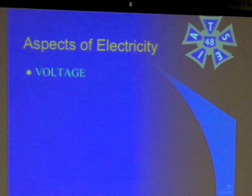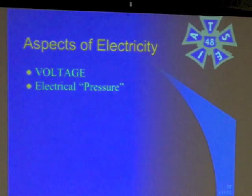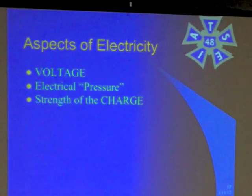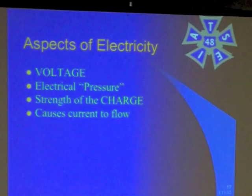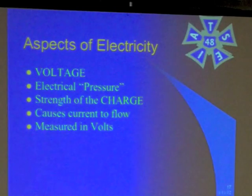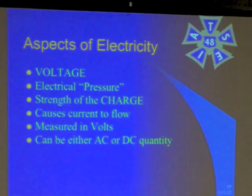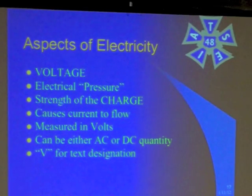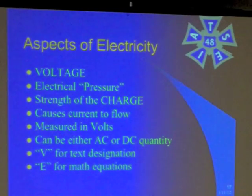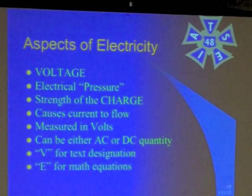Now, we have these aspects of electricity — there are four of them. The first one is voltage. This is the electrical pressure that's present in a system, the amount of voltage that's there. How much charge is there? It's the strength of the charge. This is what causes current to flow. It's measured in volts, and it can be either AC or DC. V is used when writing in text, and E is used in math equations.